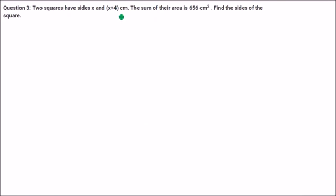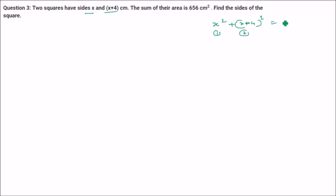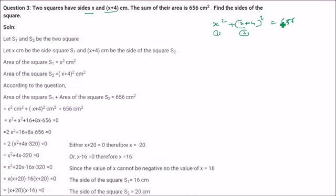Two squares have sides x and x plus 4. The sum of their areas is 656. Find the sides of the square. Area of a square is side squared, so the area of the first square is x square and the area of the second square is x plus 4 whole square, that is x square plus 16 plus 8x. Their sum equals 656, giving 2x square plus 8x plus 16 minus 656 equal to 0.